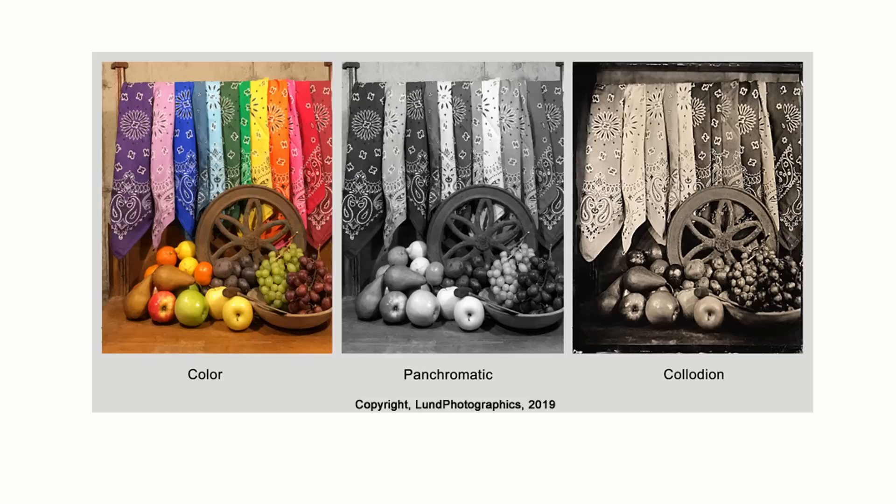Here you can see the same image shot in color, panchromatic black and white, and collodion. Pay attention to the reds and the blues. Blue objects appear brighter in a collodion image, while red objects appear darker, even though they may have close to the same reflectivity in the visual part of the spectrum.